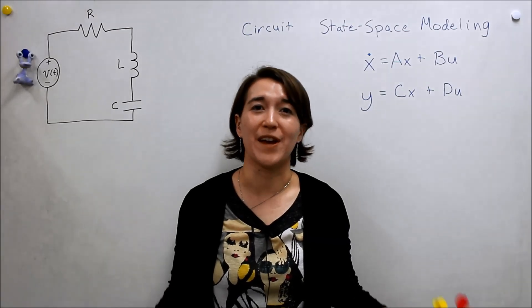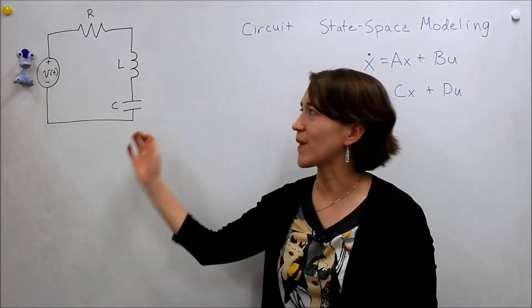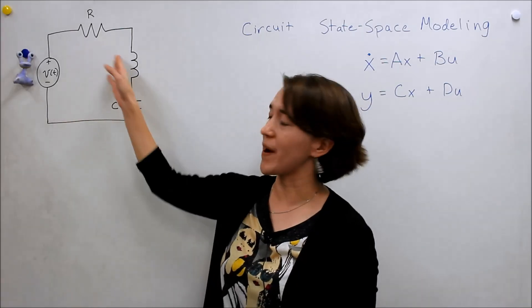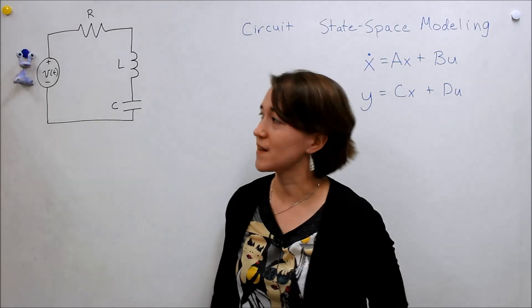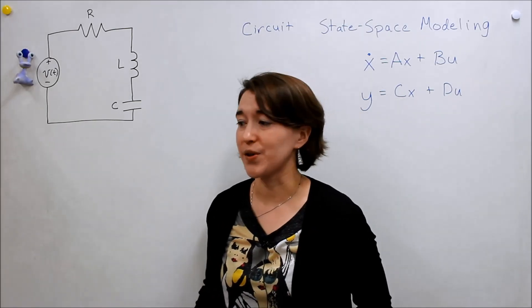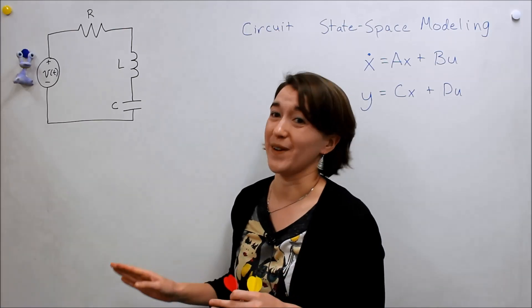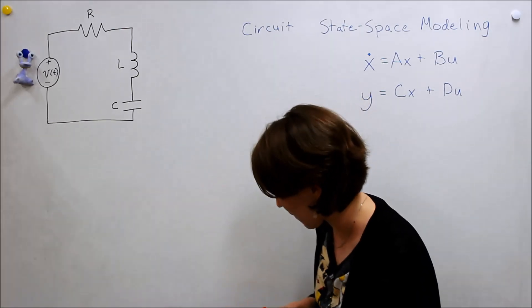Now let's do some state space modeling of a circuit. So we have our example circuit, this is our standard RLC circuit, and we're going to model it in state space. We're going to make two outputs, I know this is crazy, we're going to have two outputs.